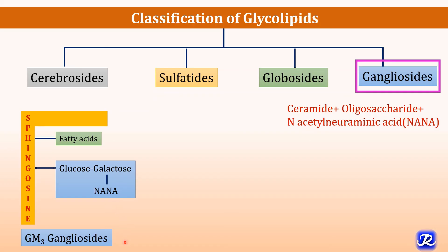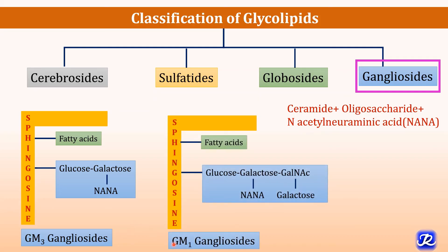This is the GM3 ganglioside. In the GM1 ganglioside, along with the ceramide and oligosaccharide, N-acetylgalactosamine is attached, and to this N-acetylgalactosamine one more galactose molecule is attached along with the N-acetylneuraminic acid.